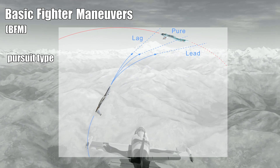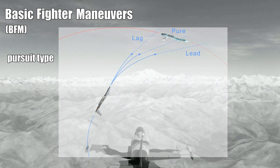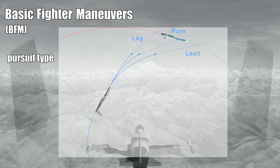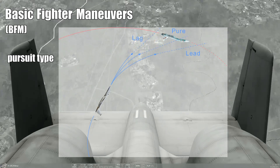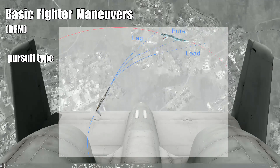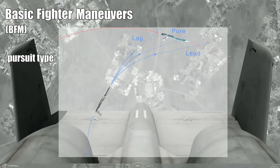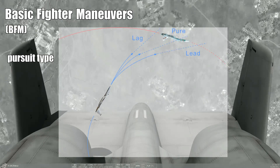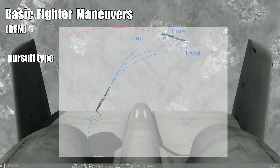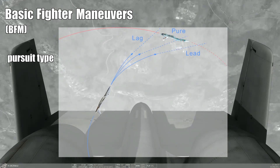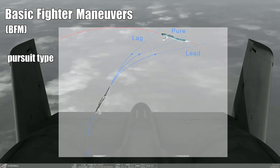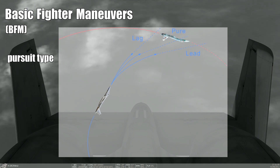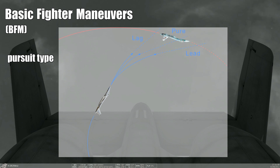This leaves us with the lead pursuit. The lead pursuit is somewhat the counterpart of the lag pursuit. While the lag pursuit usually increases the range to your enemy, the lead pursuit decreases it — it's the fastest way to catch up with someone because you literally cut them off. Problem here is that if you don't watch out and fly lead pursuit for too long, or if you enter the lead pursuit too early, you will overshoot. And as I said, you really don't want that.